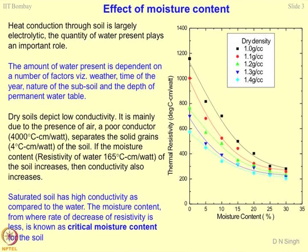The second major factor influencing thermal resistivity is moisture content. Heat conduction is mostly through the pores or pore solution present in the soil mass. The resistivity of minerals is very high compared to pore solution, so most thermal conduction takes place by advection or convection. When talking about fluids, heat transfer is convective in nature. Heat conduction through soil is largely electrolytic, so the quantity of water present plays a very important role.